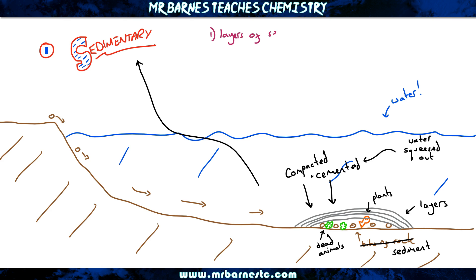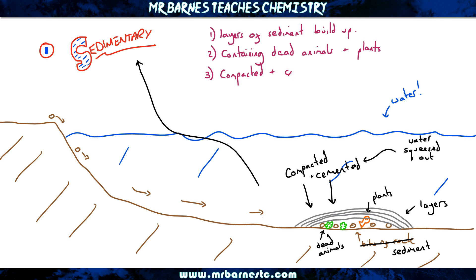So in summary, layers of sediment built up containing dead animals and plants, which became our fossils. It got compacted and cemented and then over millions of years turned into sedimentary rock.